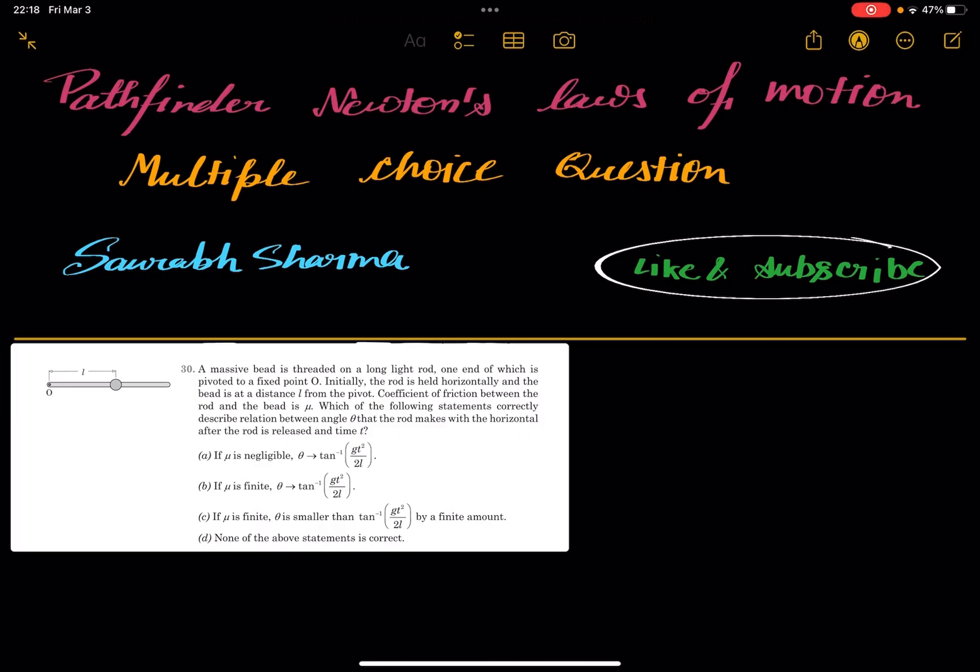What is the wording of this question? The question is saying a massive bead is threaded on a long light rod, one end of which is pivoted to a fixed point O. Initially, the rod is held horizontally and the bead is at a distance L from the pivot. Coefficient of friction between the rod and the bead is mu. Which of the following statements correctly describe the relation between theta and the rod makes with the horizontal after release from time t.